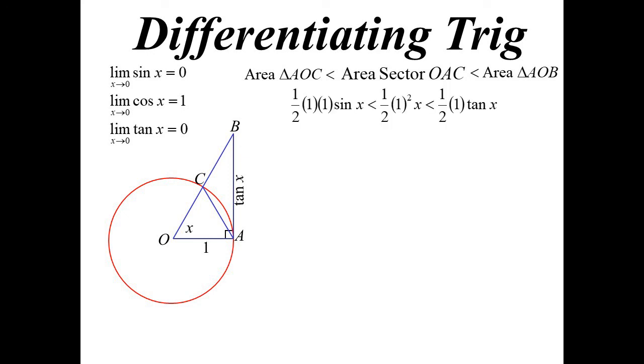So let's sub that in. Well, the inside triangle, half AB sine C, so that's half 1, 1 sine x. Inside there, we've got the sector, half R squared theta. So this one, half 1 squared x. And then the right-angled triangle, half base times height. So we get a half of 1 times tan x.